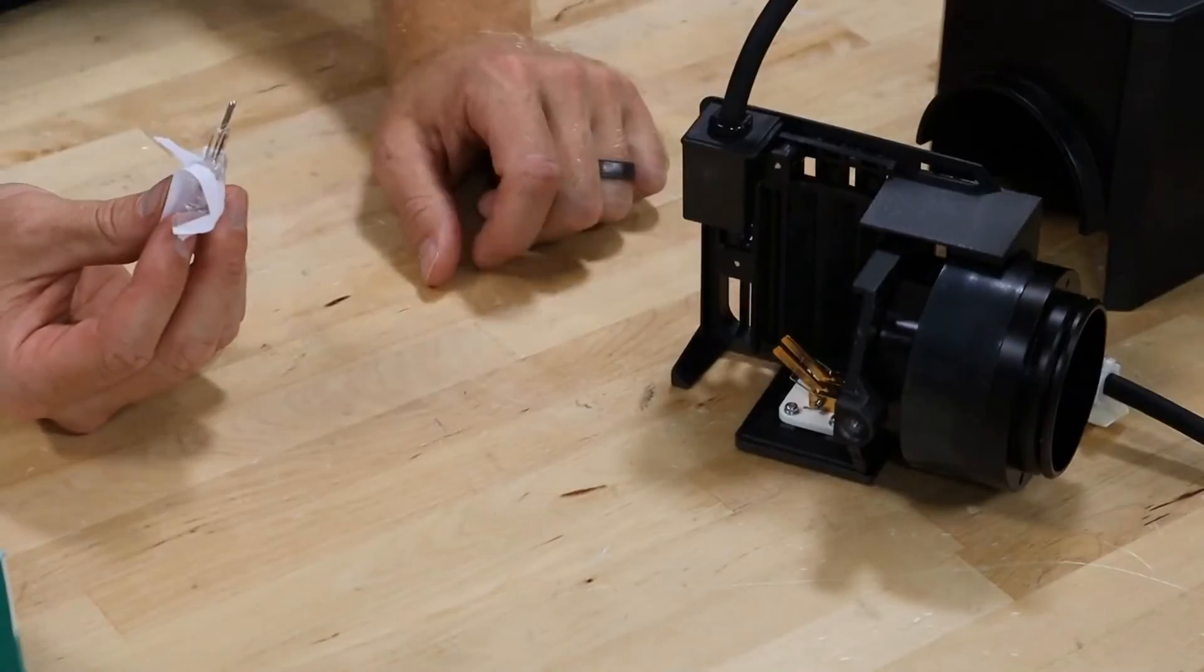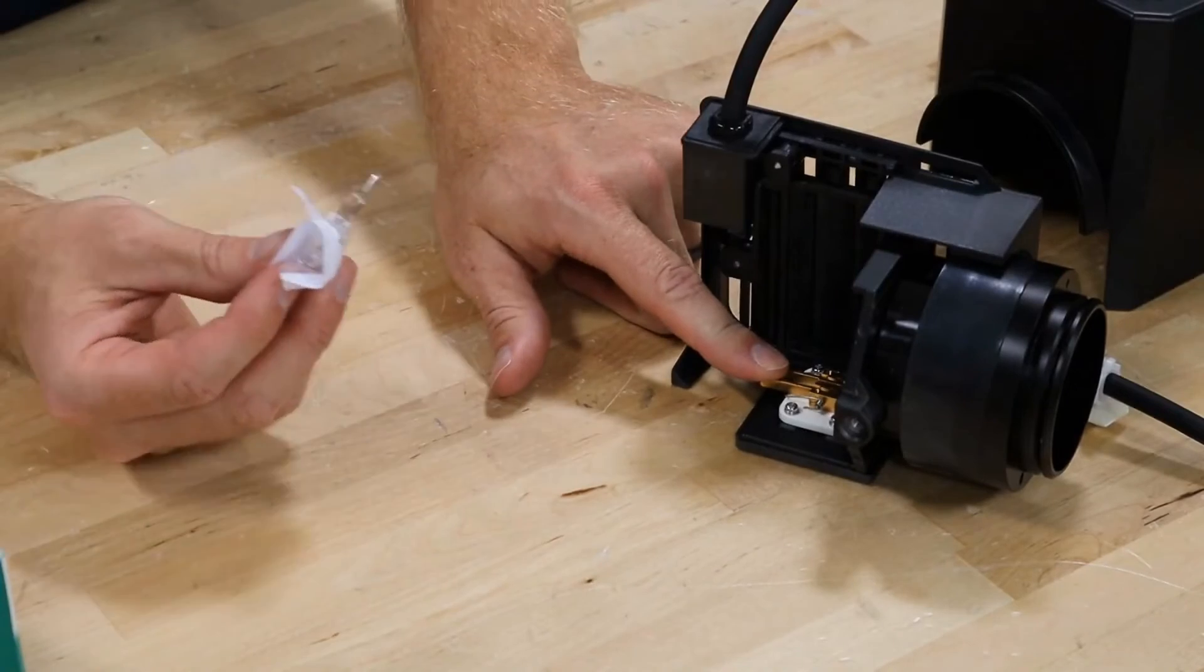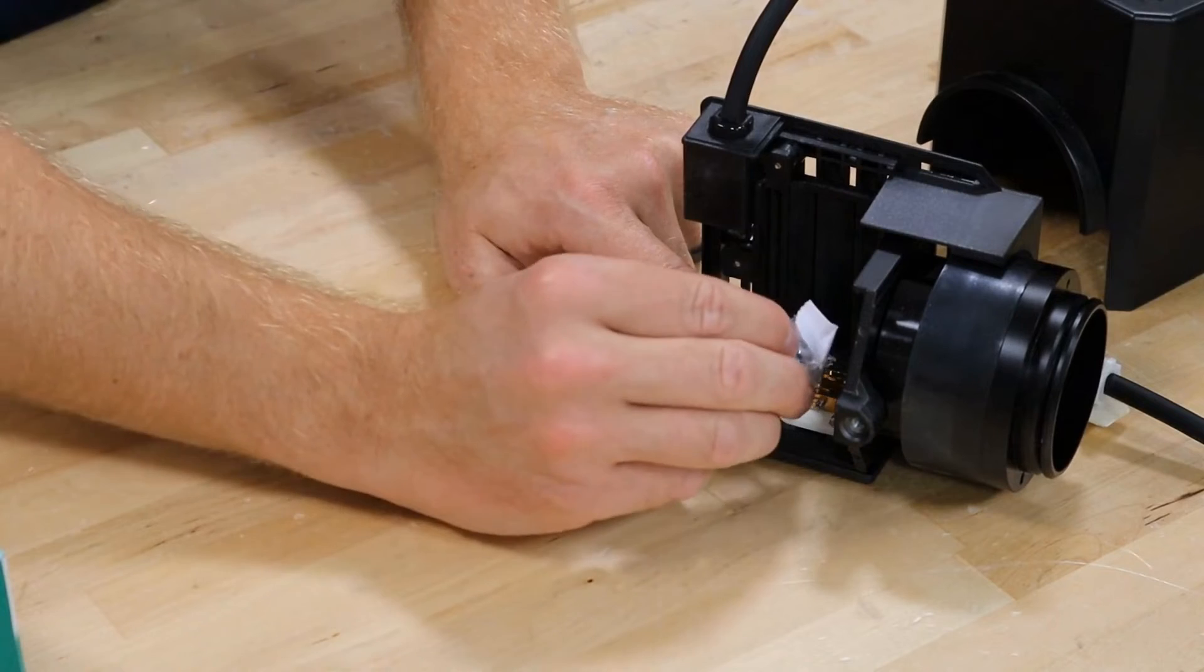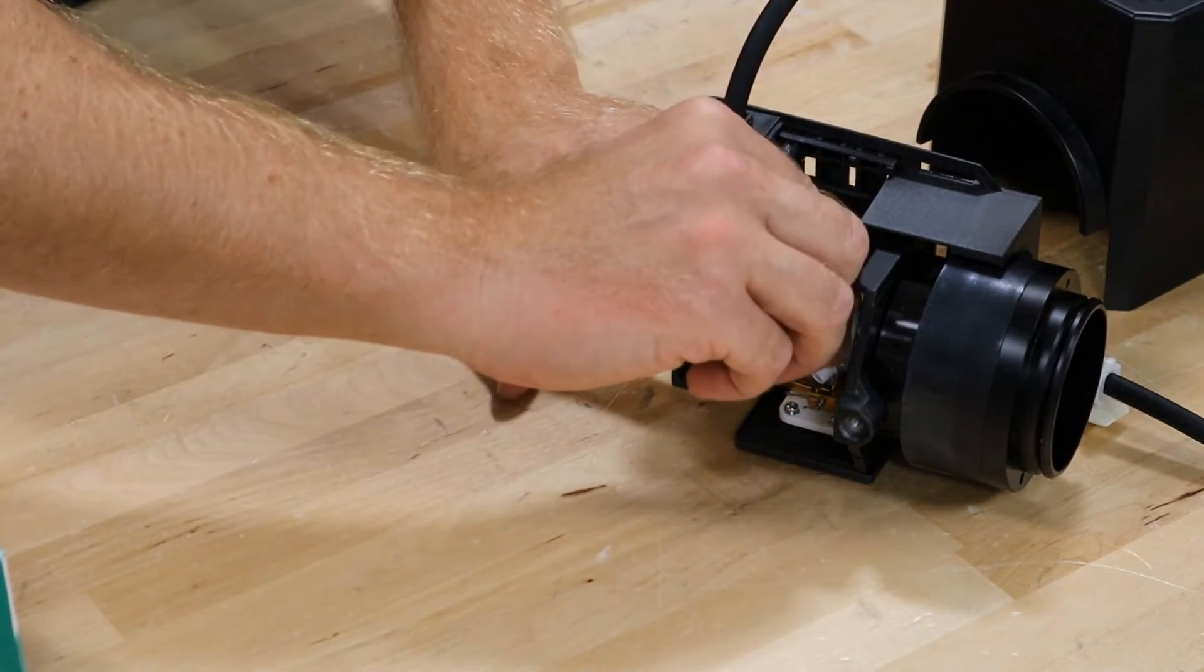Once you've got the bulb out, simply depress the two bronze looking contacts, slide the bulb into place, and then remove the plastic wrapping while the bulb is clamped in place by the contacts.